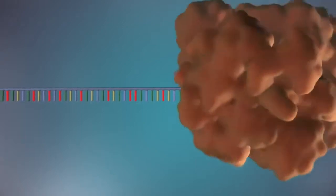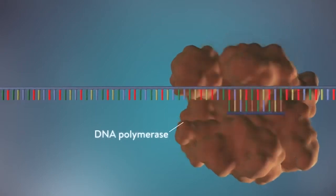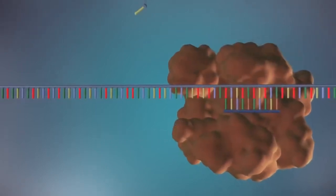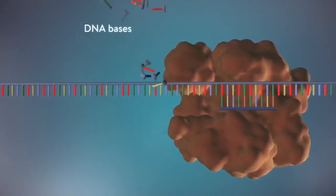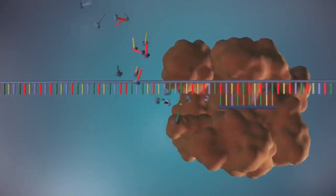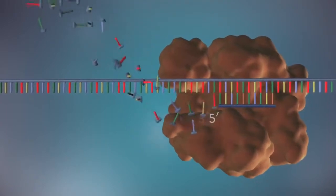An enzyme called DNA polymerase binds to the primer and will make the new strand of DNA. DNA polymerase can only add DNA bases in one direction, from the five prime end to the three prime end.